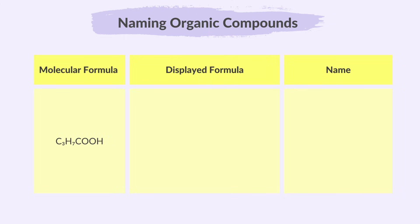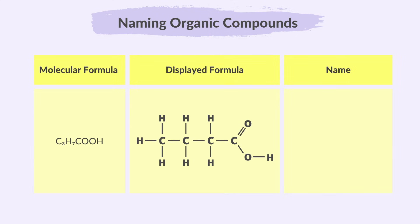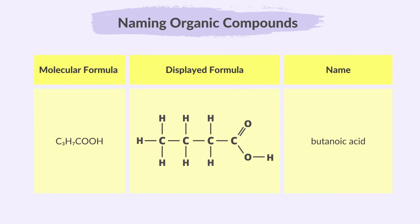Next, let's examine the molecular formula C3H7COOH and here is its displayed formula. We can see that it has four carbon atoms, indicating a prefix of but in its name. Since it contains a COOH group, we know it belongs to the carboxylic acid family, so its name will end with oic acid. Therefore, the name of this compound is butanoic acid.